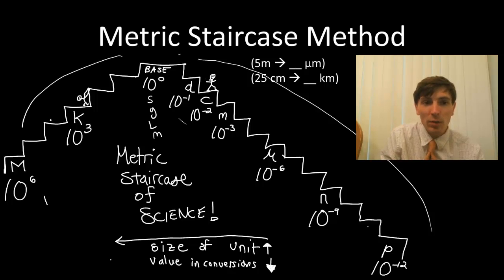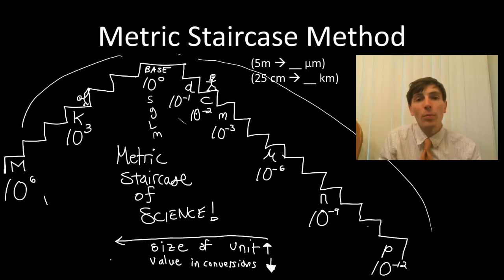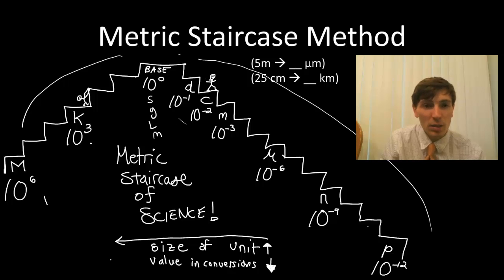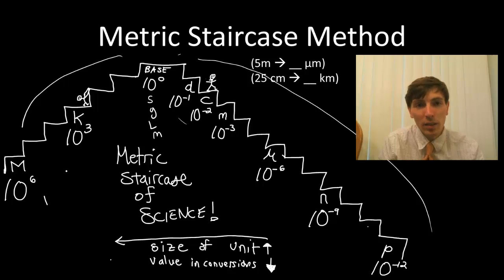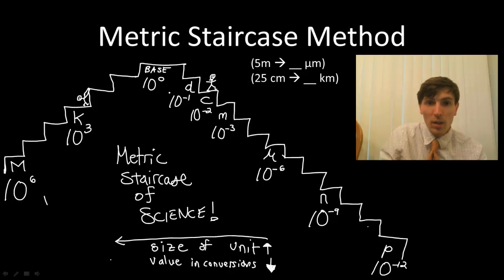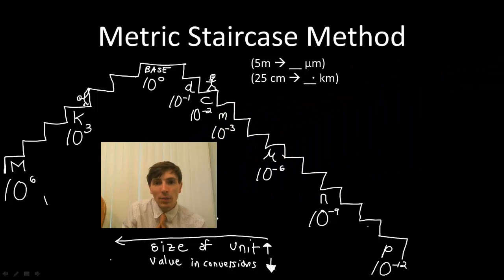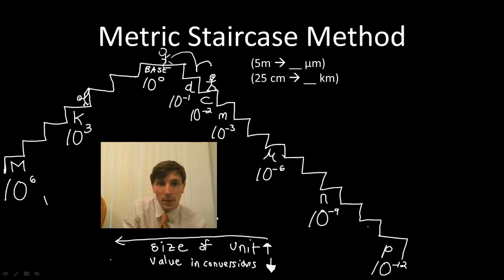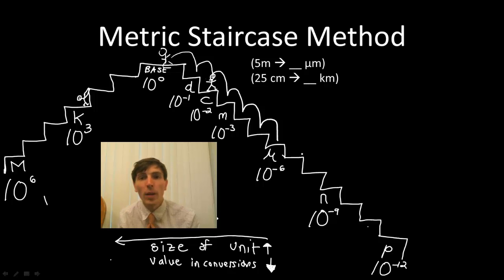All the ones on the left represent different base unit prefixes that are bigger than the base unit. Kilo — ten to the third — is a thousand meters. Mega is a million meters. So what we're going to do is convert from one to the other. I take that measurement of five meters and I want to convert it into micrometers.